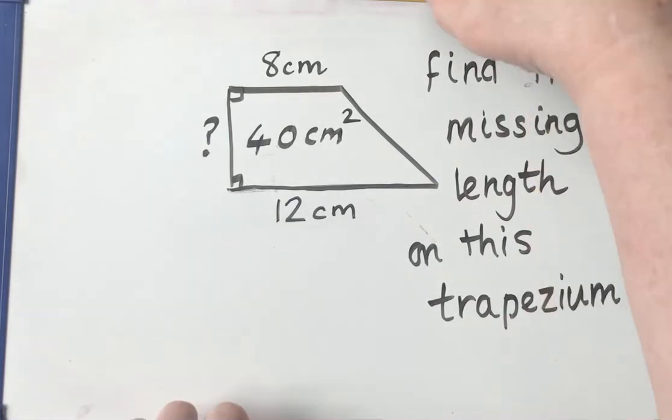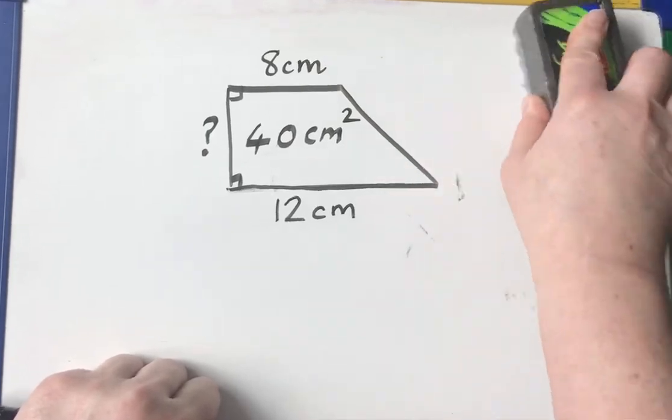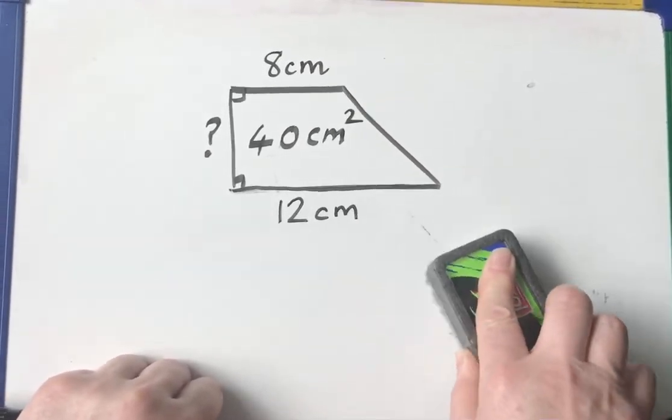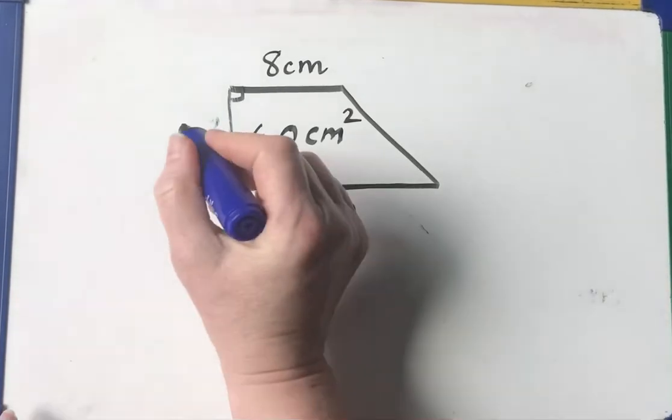Okay, well let's have a look. So I want to calculate the missing side there. Well, obviously on your exam paper, it's very unlikely to have a question mark. It's more likely to be a letter. So let's call it x.